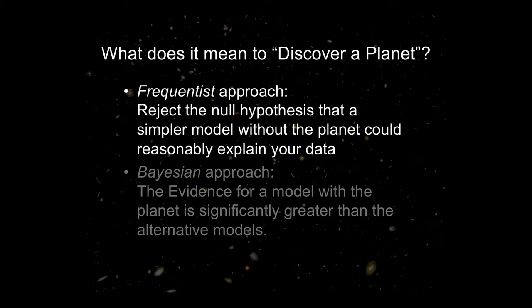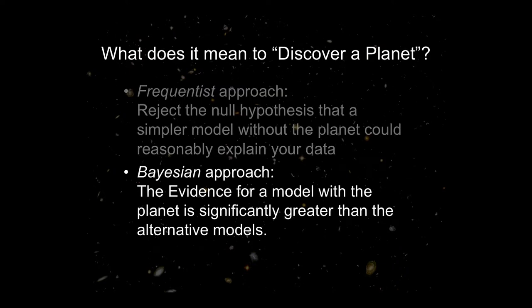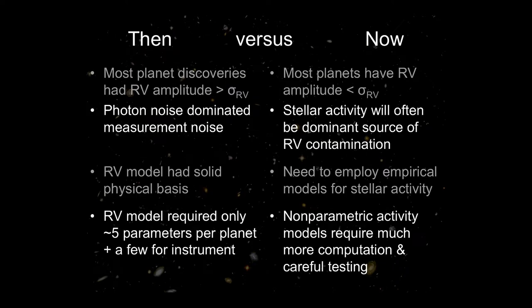Today we're shifting to a Bayesian approach where we have to say every star is variable at the level we're observing it. The key is: are the changes we see distinct enough to distinguish stellar variability from the signature of a planet? I'll talk about some of the methods we're trying to recognize those two things.